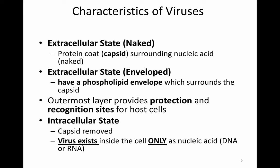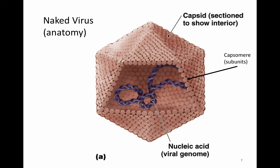In the intracellular state, once the virus enters into the cell, the capsid is removed and the virus exists only as the nucleic acid — the DNA or RNA genome. Looking at the naked virus anatomy: here we have the capsid, which is protein, and then the individual subunits — the little circles — are capsomeres, which are the protein subunits. Inside of that capsid is the nucleic acid or the viral genome. This capsid provides protection and recognition for host cells.